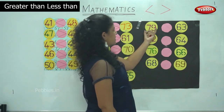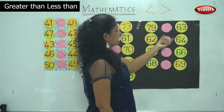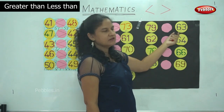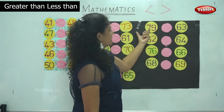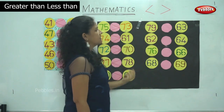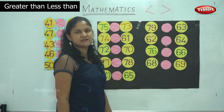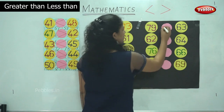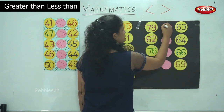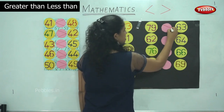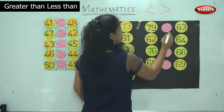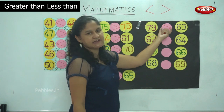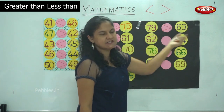Next we have number 79 and 63. When you compare these two numbers, number 79 is the bigger number, so the mouth opens towards the bigger number. It is read as 79 is greater than 63.